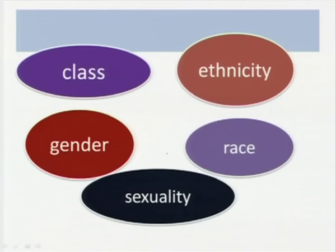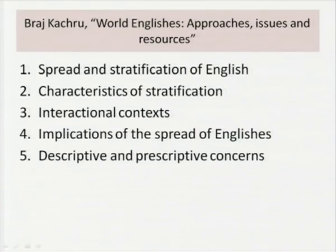From a cultural studies point of view, literary texts — and even the study of literary history — are not separate from issues of class, ethnicity, caste, race, gender, and sexual orientation. These texts are not just touched by but also informed by these key terms in the study of literature and culture: class, gender, ethnicity, race, and sexuality.